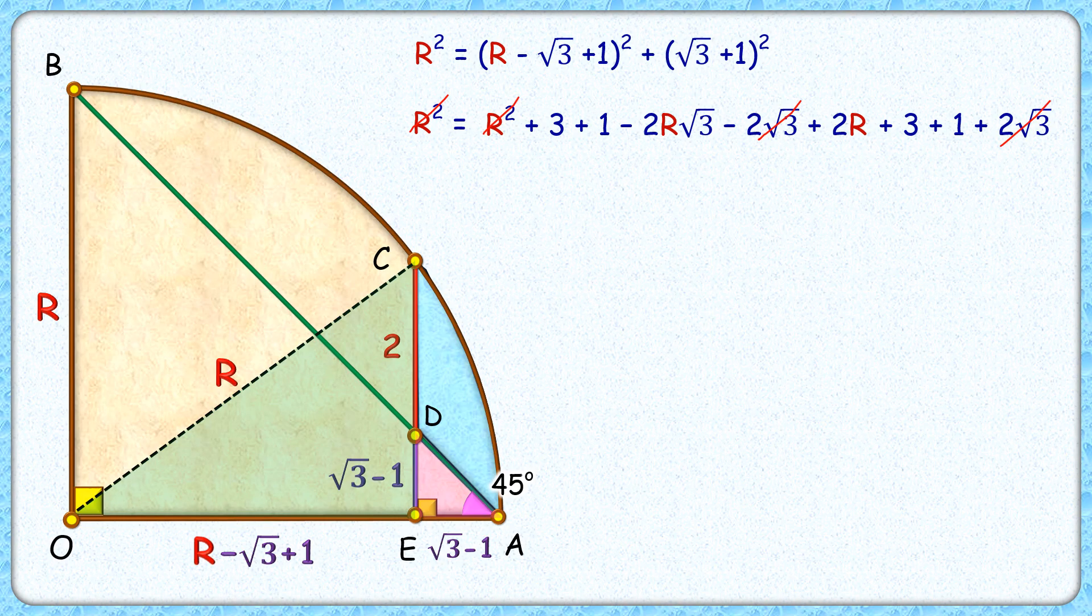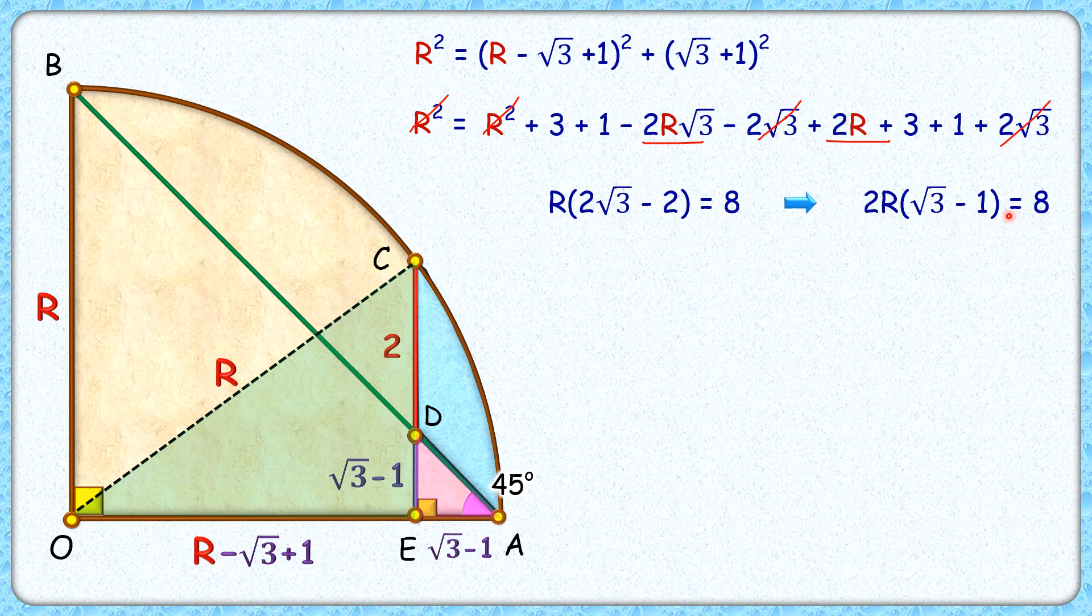Taking terms with R on the left-hand side, we'll get R times 2 root 3 minus 2. This equals 4 plus 4, which is 8. Here 2 will come common, so 2R times root 3 minus 1 is 8, or R equals 4.